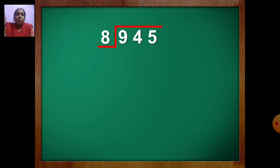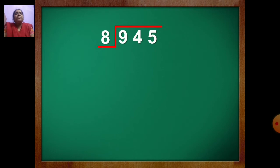Now you will take one number at a time. First we will take which number? 9. So you have to say table of 8. In table of 8, which number will become less than 9? 8 ones are 8. So you will write 1 up, 8 down. Draw the line, put the sign of minus, and now you will subtract. 9 minus 8 is how much? 1.